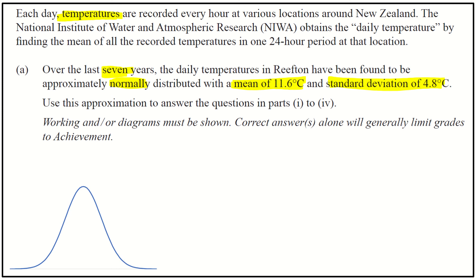What that tells me is in terms of my diagram, which I always want to draw, I can put those means and standard deviations on it. My mean is always going to go right down the middle - that's 11.6, and we've got a standard deviation of 4.8. So that's the details I want to use for the next few questions.